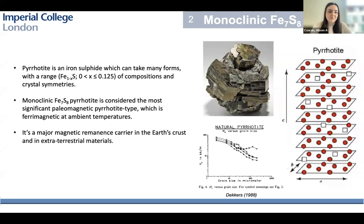I'm sure you all know what pyrrhotite is - it's an iron sulfide. Depending on the ratio between the iron and the sulfur you can get a range of compositions and crystal symmetries. Pyrrhotite is a mineral of interest to a vast range of disciplines, including material science, planetary scientists, and geophysicists. This is because it's found in the Earth's crust and also extraterrestrial samples such as meteorites. Today I'll be focusing on the monoclinic pyrrhotite, which is Fe7S8, and this is considered to be the most significant paleomagnetic pyrrhotite type because it's very magnetic at ambient temperatures and can significantly contribute to the remnant magnetization in its host rocks. So the understanding of the micromagnetic side of this is important.